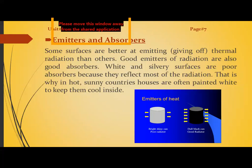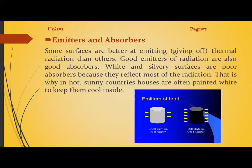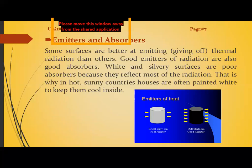Because white surfaces reflect most radiation, in hot sunny countries houses are often painted white to keep them cool. If the temperature rises to about 40 degrees centigrade, people paint their houses white because white color reflects most infrared electromagnetic rays. If houses are painted darker colors like black or blue, most rays will be absorbed and the houses will become warmer inside.